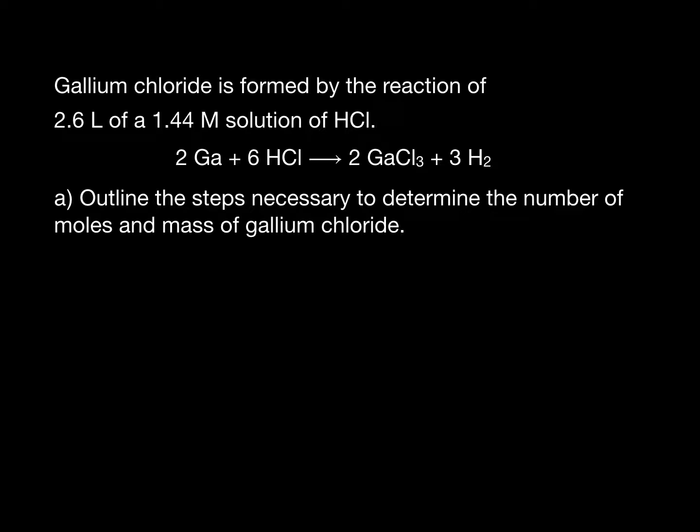This is OpenStax chapter 4 problem 47, which asks us to outline the necessary steps to convert 2.6 liters of 1.44 molar hydrochloric acid to moles and also mass of gallium chloride.